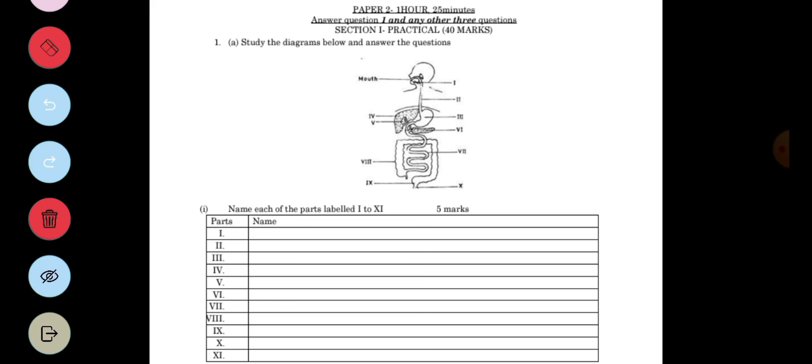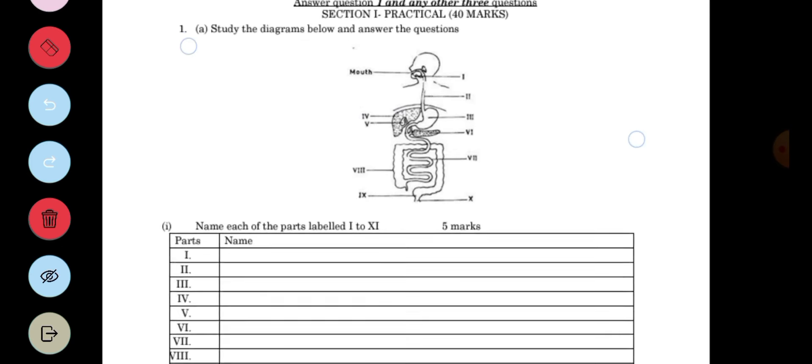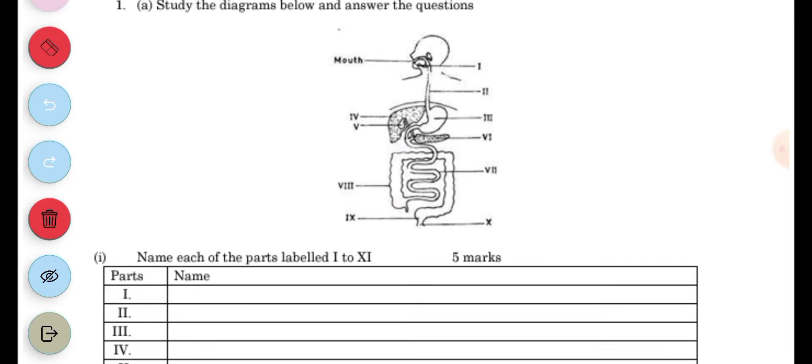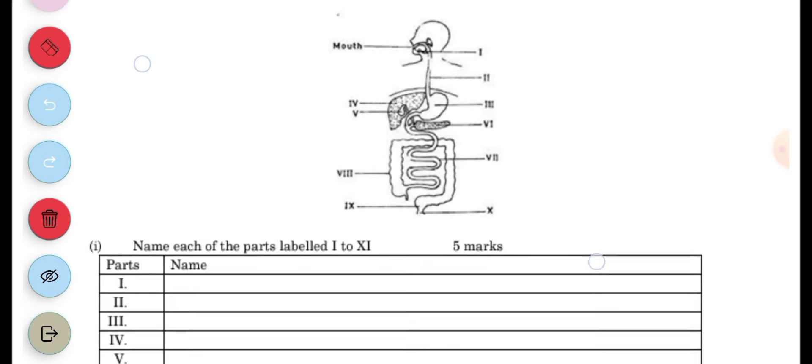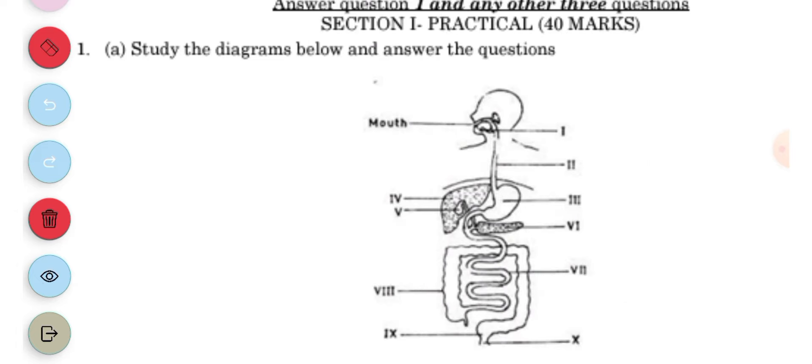Now, study the diagram below and answer the questions. We have parts I to X and we're expected to name all the parts. I is the mouth, II is the esophagus, III is the stomach.